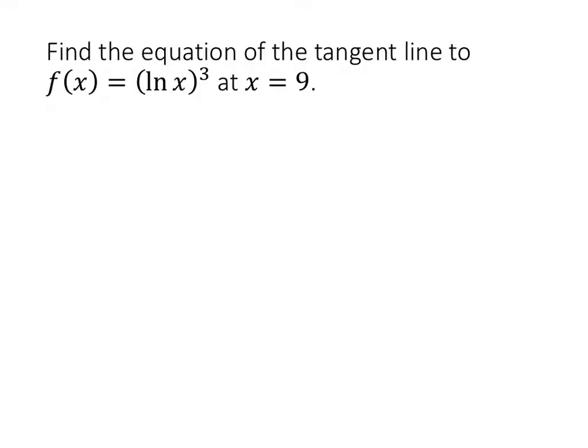So whenever we're asked to find the equation of a tangent line, the thing we have to keep in mind is the form that we use for the equations of lines, which is the point slope form y minus y₀ equals m times x minus x₀. So our task in this case is going to be to figure out the values of x₀, y₀, and m.